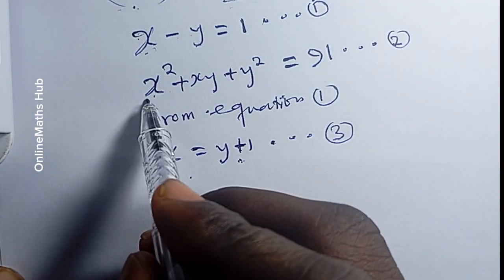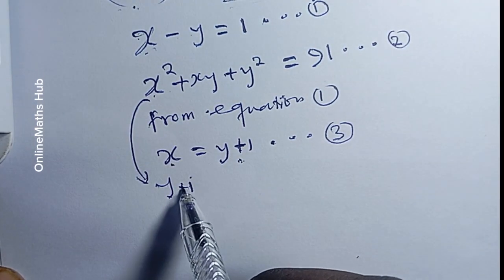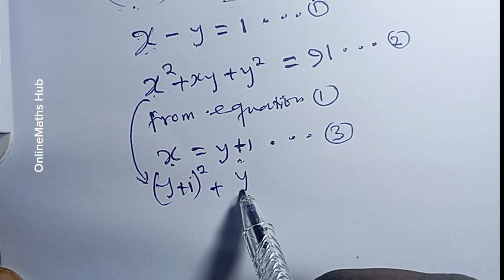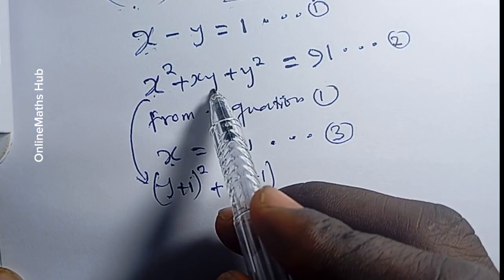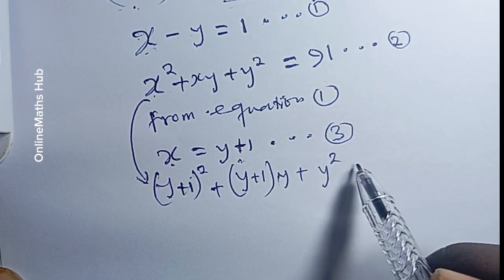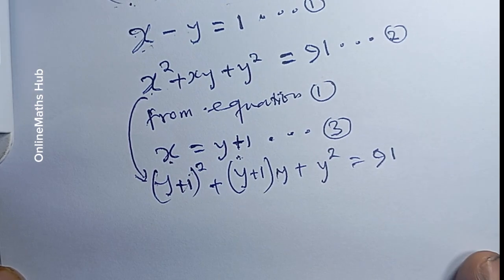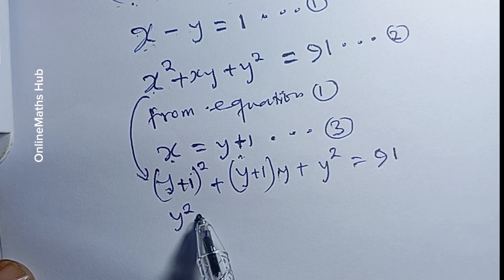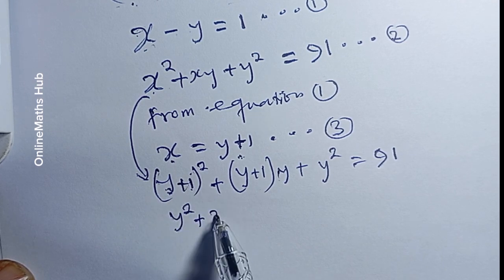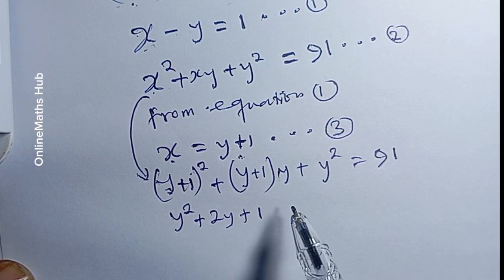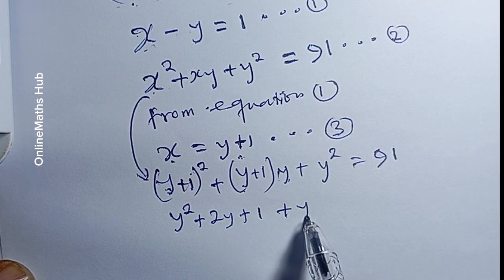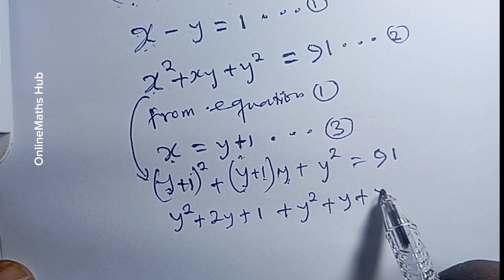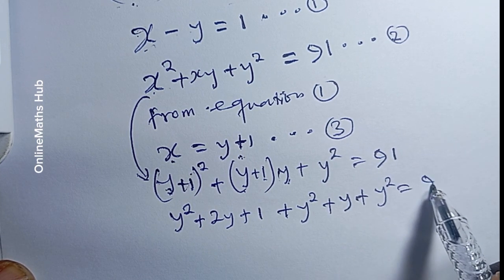Replacing x with (y plus 1) in equation 2, we get (y + 1)² plus (y + 1)y plus y² equal to 91. Expanding: y² plus 2y plus 1, plus y² plus y, plus y² equals 91.